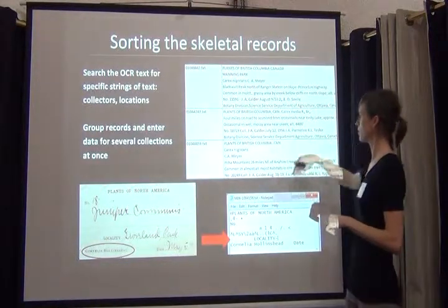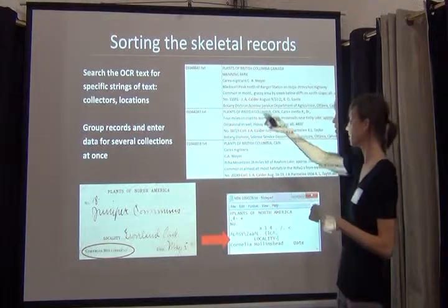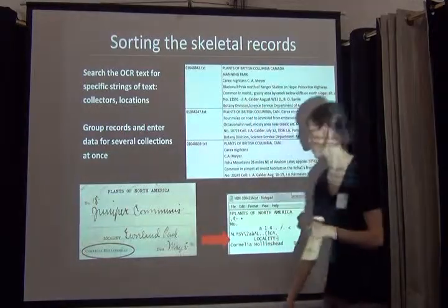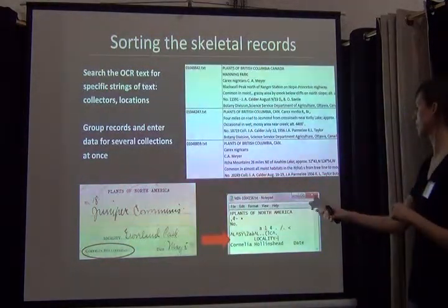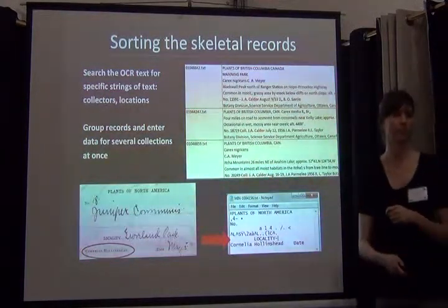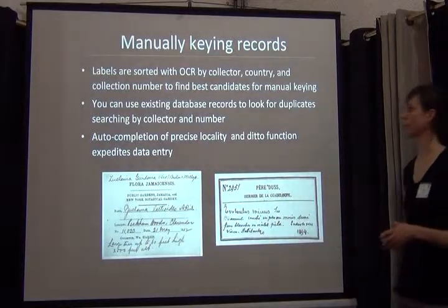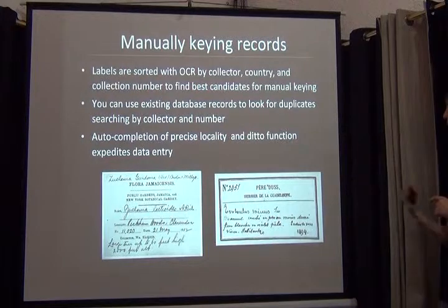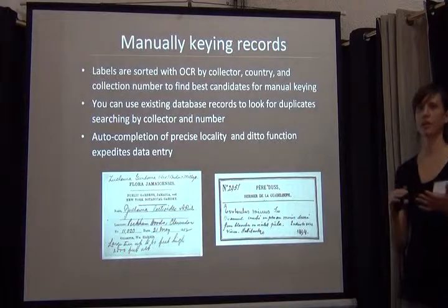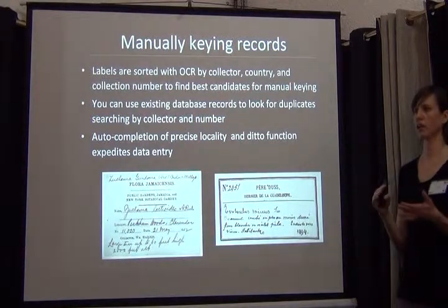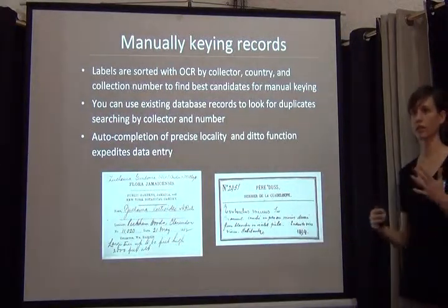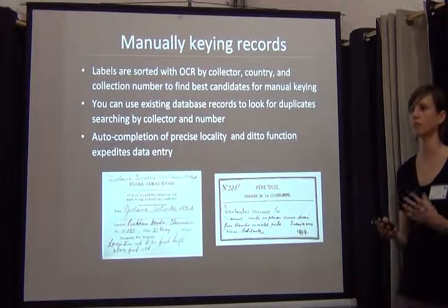This is the OCR text file showing a text search for J.A. Calder. Even on these really bad labels that are mostly handwritten, if you want to find all of the specimens collected by Cornelia Hollingshead, you can find them pretty easily, even though the labels themselves are primarily handwritten. Then we get into the manual keying. We sort everything, and at that point you can query the text for anything — a specific collection number, a specific county the collector was working in. You can try to search the text for dates, look for anything collected from 1991 by this collector at this location, and then get everything that was collected nearby.